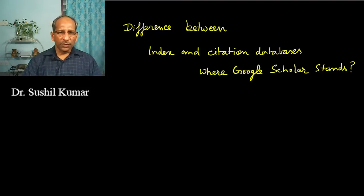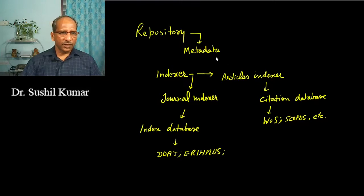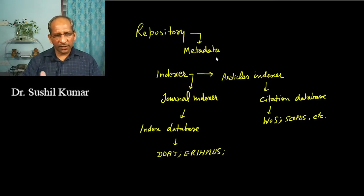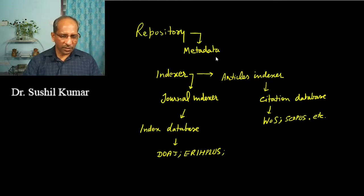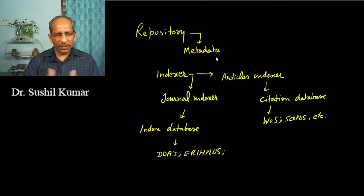This topic will cover all related information. We will understand what a repository is, then we will understand metadata. After that, we will divide index into two categories: one is the journal indexing category and the second is the article indexing category. I will try to explain with some examples so you get a clear idea.